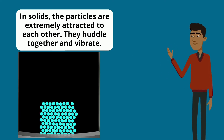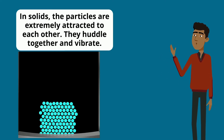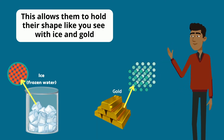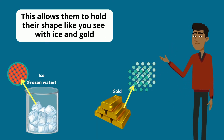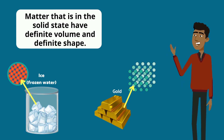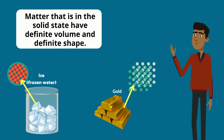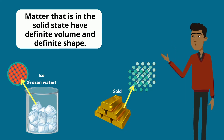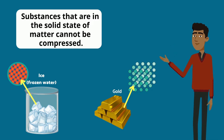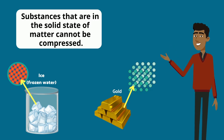In solids, the particles are extremely attracted to each other. They huddle together and vibrate. This allows them to hold their shape, like you see with ice and gold. Matter in the solid state has a definite volume and a definite shape. Substances in the solid state of matter cannot be compressed.